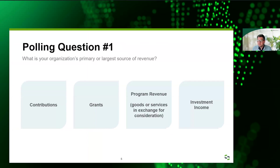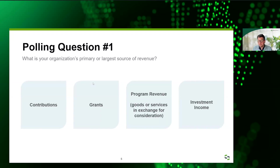Let's get right into our first polling question. We're just trying to get an idea of what is your organization's primary or largest source of revenue. The options are contributions, grants, program revenues — which would be your exchange-type revenues — dues or other kinds of fees, or investment income. Give you a couple minutes to answer that.